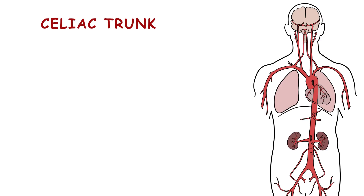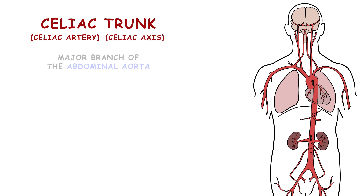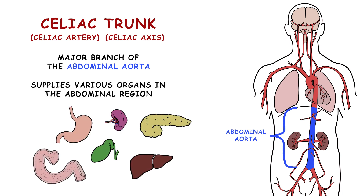The celiac trunk, also known as the celiac artery or the celiac axis, is a major branch of the abdominal aorta. It is responsible for supplying blood to various organs in the abdominal region.